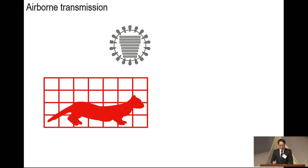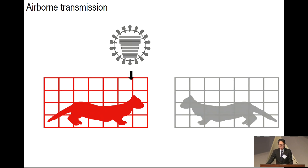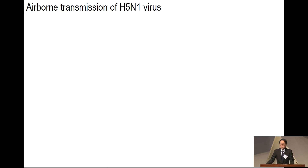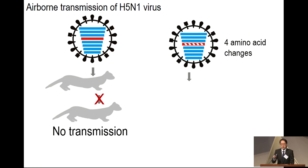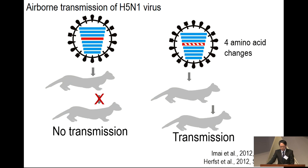This is how we test the airborne transmissibility of influenza virus: we infect a ferret with a virus, and the next day, we place a cage containing an uninfected ferret right next to the infected ferret. There is a gap between the two cages, so the only way the virus can be transmitted from infected to uninfected is via respiratory droplets. Using this system, we tested airborne transmissibility of H5N1 virus. The H5N1 virus did not transmit under the conditions we tested, but with four mutations in the hemagglutinin gene, the virus transmitted via respiratory droplet. Similar work has been reported by Dr. Ron Fouchier in the Netherlands.